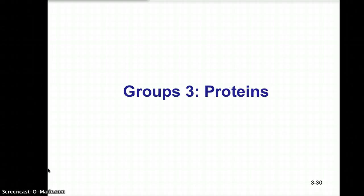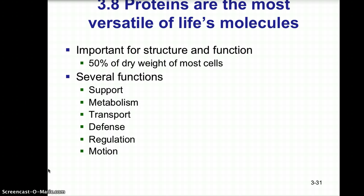Our group 3 and 4 macromolecules are nucleic acids and proteins, our last two macromolecule groups to examine within our biochemistry chapter. Let's look at group 3 first: proteins. Proteins are the most versatile of life's molecules. They are important for both structure and function, and make up 50% of the dry weight of most of our cells.